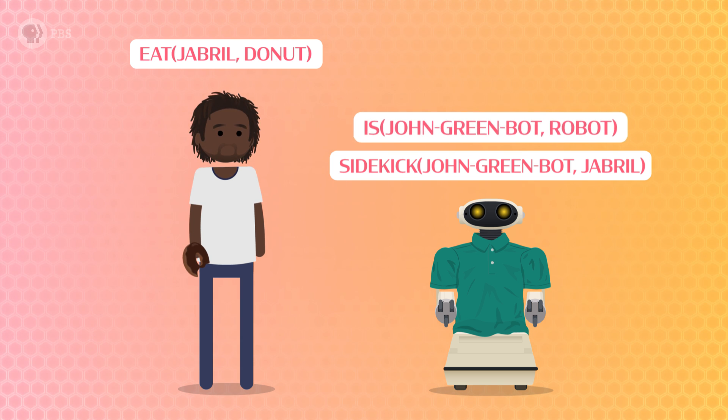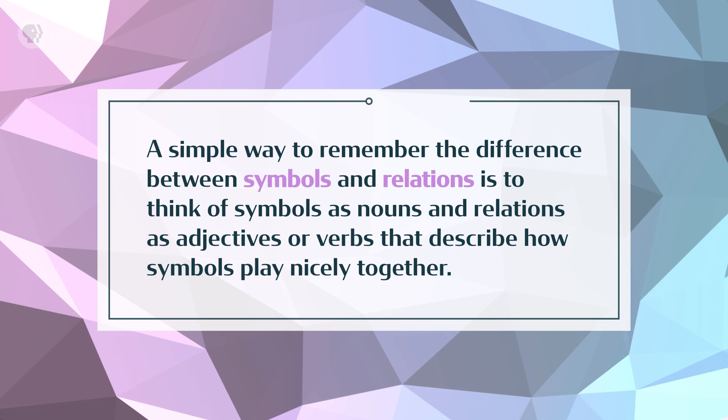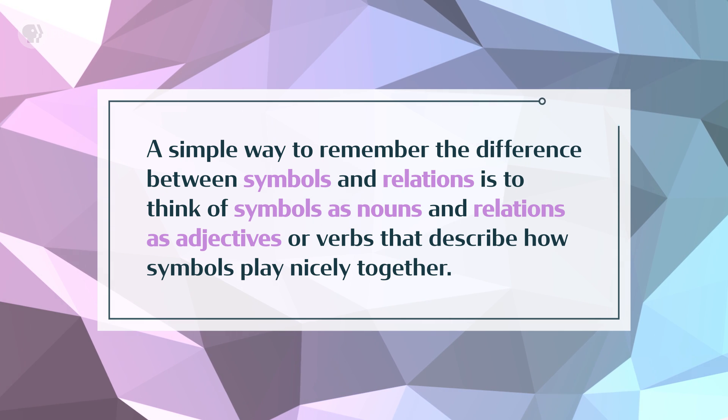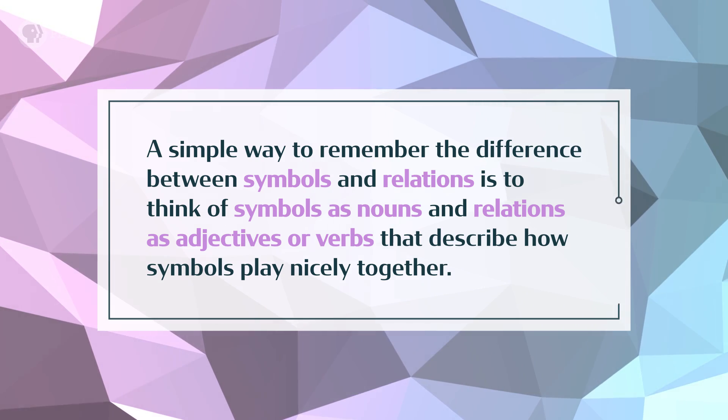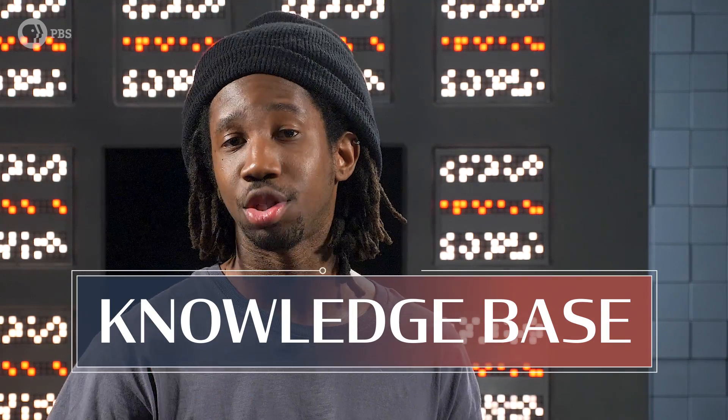A symbol can be a part of lots of relations, depending on what we want our AI system to do. So we can write others, like is(John Greenbot, Robot), or wears(John Greenbot, Polo). All of our examples in this video will include a max of two symbols for simplicity, but you can have any number of symbols described by one relation. A simple way to remember the difference between symbols and relations is to think of symbols as nouns, and relations as adjectives or verbs that describe how symbols play nicely together. This way of thinking lets us capture pieces of our universe in a way that computers can understand, and then they can use their superior logic powers to help us solve problems. The collection of all true things about our universe is called a knowledge base, and we can use logic to carefully examine our knowledge bases in order to answer questions and discover new things with AI.